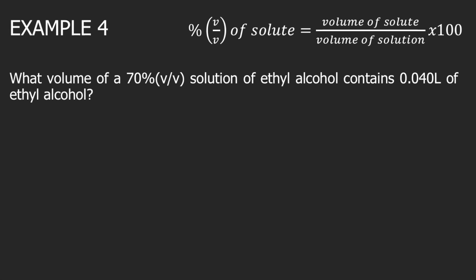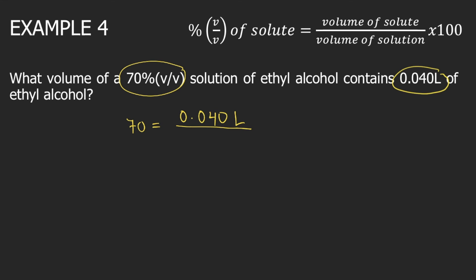Last example. What volume of a 70% by volume solution of ethyl alcohol contains 0.040 liters of ethyl alcohol? We will still use the formula. We are given the volume percent, which is 70%. So: 70 equals the volume of solute — ethyl alcohol, which is 0.040 liters — divided by the volume of solution, which is not given, times 100.